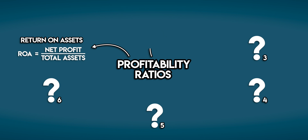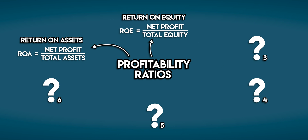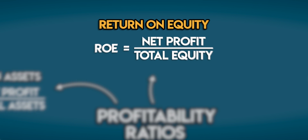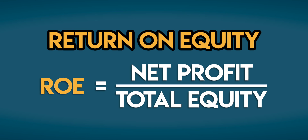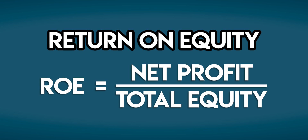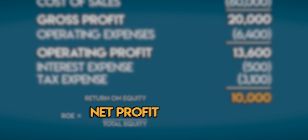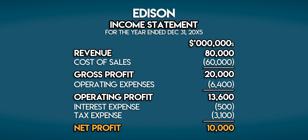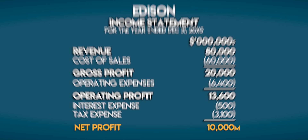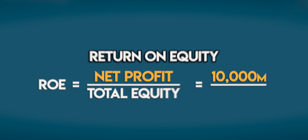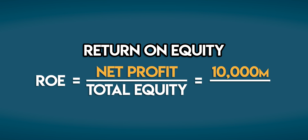At number two we have return on equity. Return on equity, or ROE, equals net profit divided by total equity. We know Edison's net profit is on its income statement and it hasn't changed — they generated 10 billion dollars in net profit.